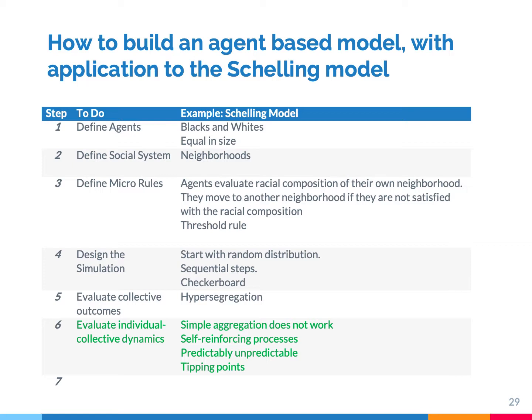So apparently this Schelling model is able to explain hypersegregation, even when people have only mild in-group preferences — just a slight bias.